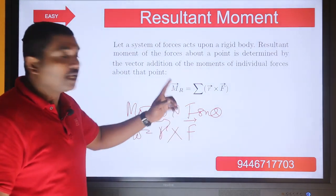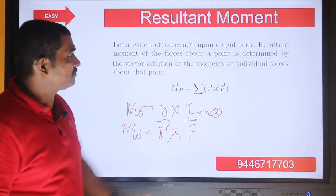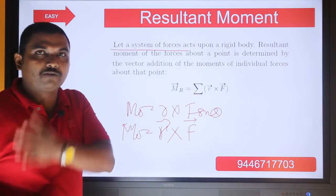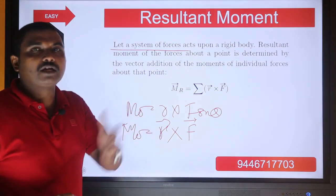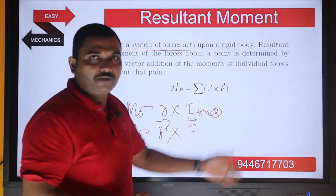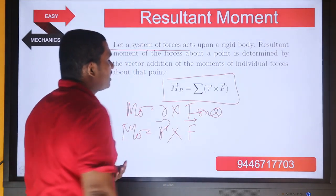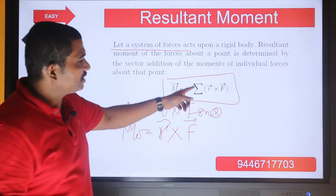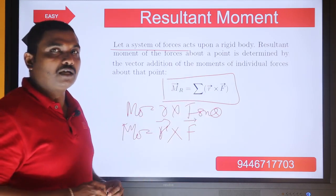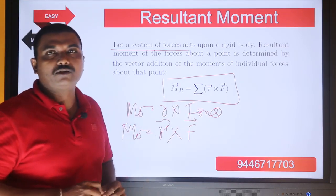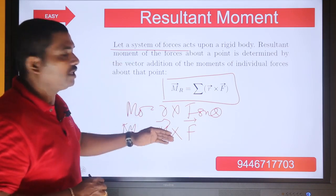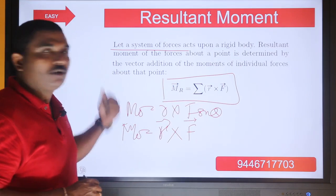If there are many forces — f1, f2, f3, f4 — acting on a rigid body, with corresponding distance vectors r1, r2, r3, r4, then each moment is r1 cross f1, r2 cross f2, and so on. The resultant moment Mr is the algebraic sum of vector r cross vector f for all forces. This resultant moment is the algebraic sum of all individual moments taken into one single resultant moment.